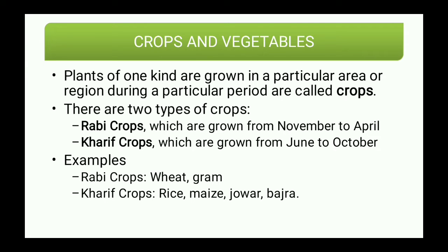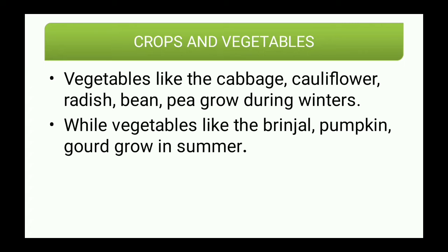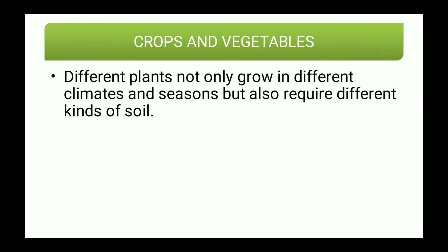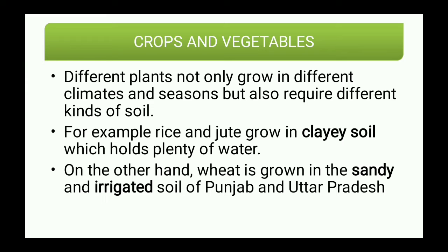Vegetables like cabbage, cauliflower, radish, bean, and pea grow during winters, whereas vegetables like brinjal, pumpkin, and gourd grow in the summer season. Different plants not only grow in different climates and seasons but also require different kinds of soil. For example, rice and jute grow in clayey soil, which holds plenty of water.